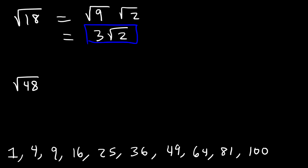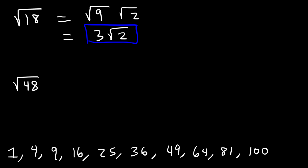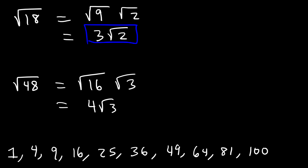Now for 48, what perfect squares go into it? 4 can go into it and 16 can go into it. When you have two perfect squares that can go into a number, choose the larger value. 48 divided by 16 is 3, so break down 48 into 16 and 3. The square root of 16 is 4, so it simplifies to 4 square root 3.